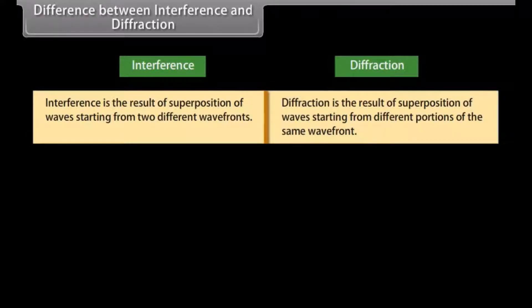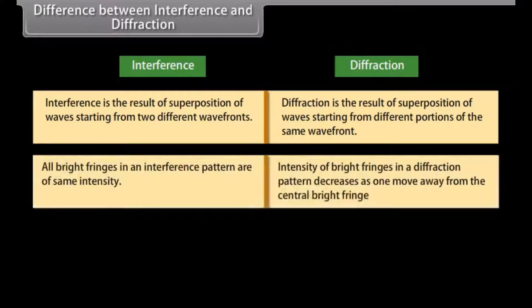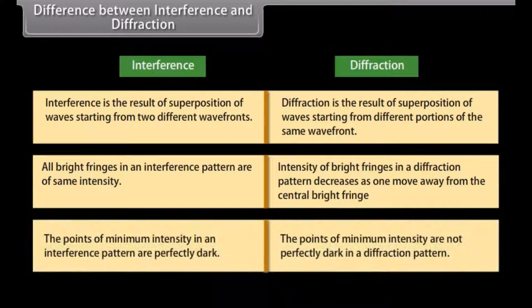Interference is the result of superposition of waves starting from two different wavefronts, whereas diffraction is the result of superposition of waves starting from different portions of the same wavefront. All bright fringes in an interference pattern are of the same intensity, whereas intensity decreases as one moves away from the central bright fringe in a diffraction pattern. The points of minimum intensity in an interference pattern are perfectly dark, whereas they are not perfectly dark in a diffraction pattern.